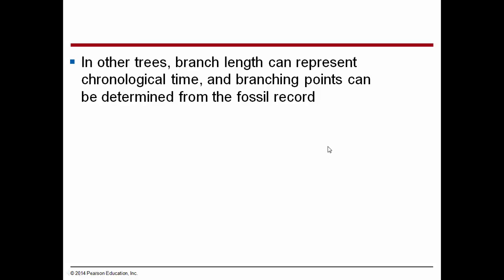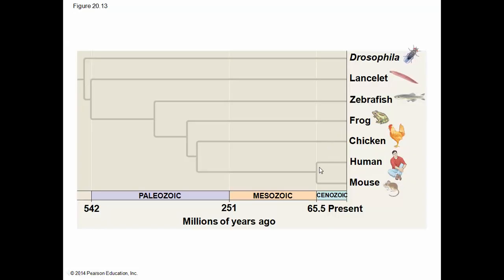In other trees, branch length can represent chronological time, and branching points can be determined from the fossil record. Here we look at the same species over millions of years, using molecular clocks to determine the distance. The Paleozoic period is the ancient time period. Mesozoic is the age of the dinosaurs. Then the Cenozoic, beginning 65 million years ago — that was the massive asteroid collision that caused the extinction of the dinosaurs and brought on the recent age, the Cenozoic, when mammals first began to radiate.